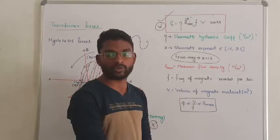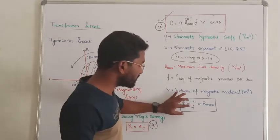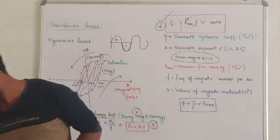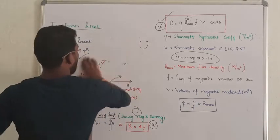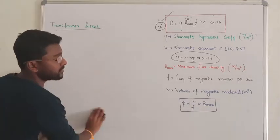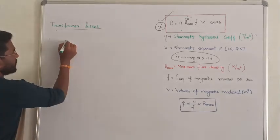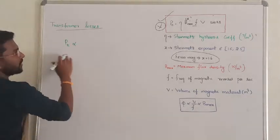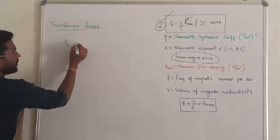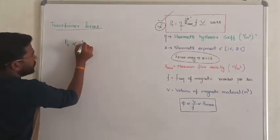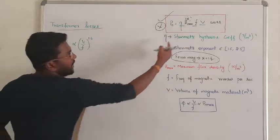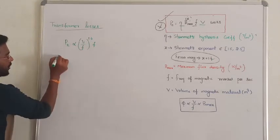If V by F is constant, what changes are we facing in hysteresis losses? Hysteresis loss is directly proportional to - remember, Steinmetz constant is fixed and volume is fixed - directly proportional to B max. I can substitute V by F to the power 1.6, for ferromagnetic material, into F.